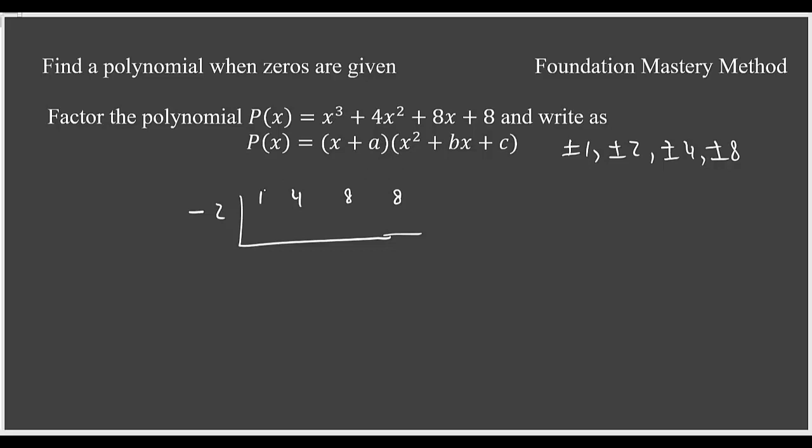So the synthetic division says you pull the first term here, multiply by negative 2, put it here, add them. It's 2. Again multiply with this, you get negative 4. Add them, 4. 4 times negative 2 is negative 8. And when you add this is 0 expected. That remainder should be 0. We said x equals negative 2 is a zero.